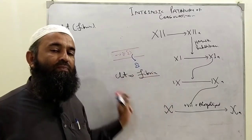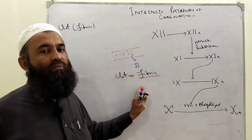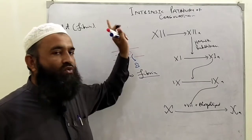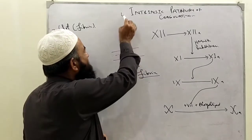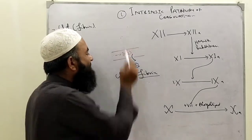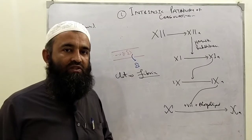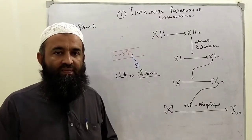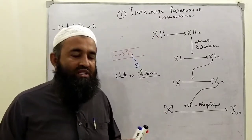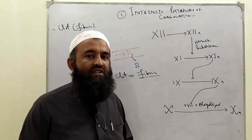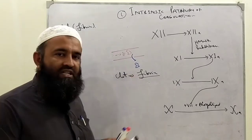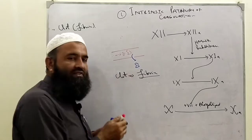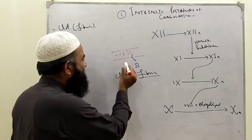Formation of fibrin is important. For the formation of fibrin we have two pathways: one is the intrinsic pathway and the other is the extrinsic pathway. Today we will discuss the intrinsic pathway. The intrinsic pathway activates when there is trauma to the blood vessels or any vessel.